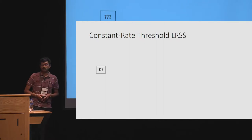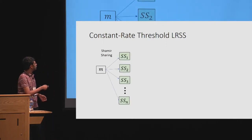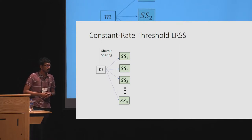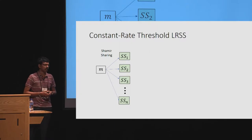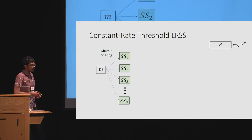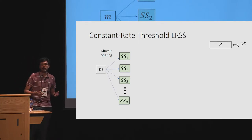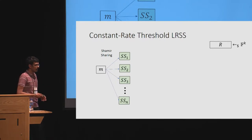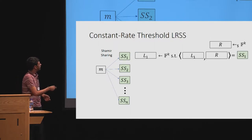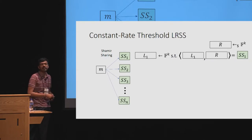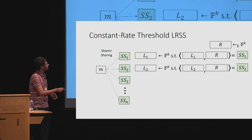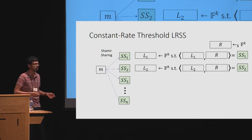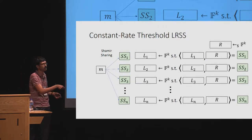Let's start with the construction. Say we want to secret share a message M. The first step is to split M into n shares using Shamir's secret sharing — we do not assume any leakage resilience from this underlying scheme. Each Shamir share is in a finite field F. The next step is to choose a random vector R from F^k, where k is some constant. Then for each i, choose a random vector Li from F^k such that the inner product of Li with R equals the i-th Shamir share SSi.